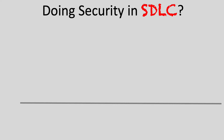In today's module, we're going to be looking at the secure development lifecycle, and specifically doing security. When we look at the SDLC, it's really about developing solutions, software, systems, etc. How do we do security? Where do we do security? What types of security are we doing?